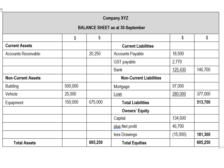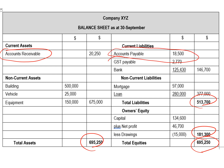So we end up with assets equals liabilities plus owner's equity. Be mindful that when completing your balance sheet, some items require you to refer to different journals — bank balance comes from the cash flow, net profit from the income statement, and many other items carry over due to the going concern assumption from previous periods. Thank you.